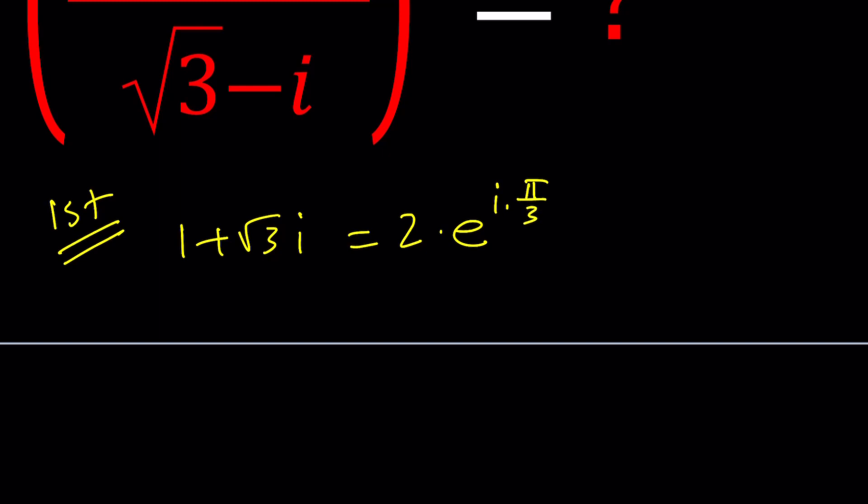First of all, if you find the modulus, you're going to see that it's the square root of 1 plus 3, which is 2. And then if you think about the angle whose cosine is 1/2 and whose sine is √3/2, you're going to realize the triangle is going to look like this.